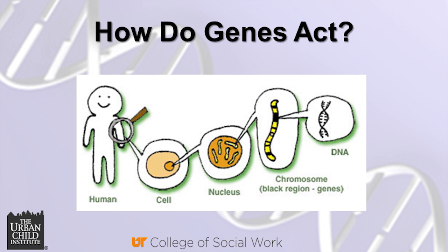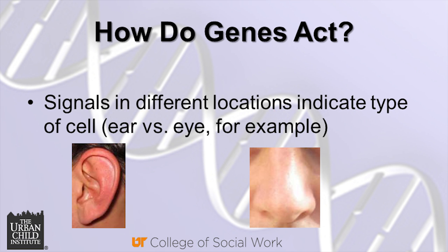One thing that isn't always clear when we talk about genes is how genes do what they do. It's quite simple: every cell of your body has identical DNA. Yet not every cell turns out the same way. Although every cell contains the same DNA, different chemical signals at different locations cause genes to be expressed differently. This is an important fact we will discuss in detail later, and it turns out to be a major reason why it's so important for social workers to understand genetics.